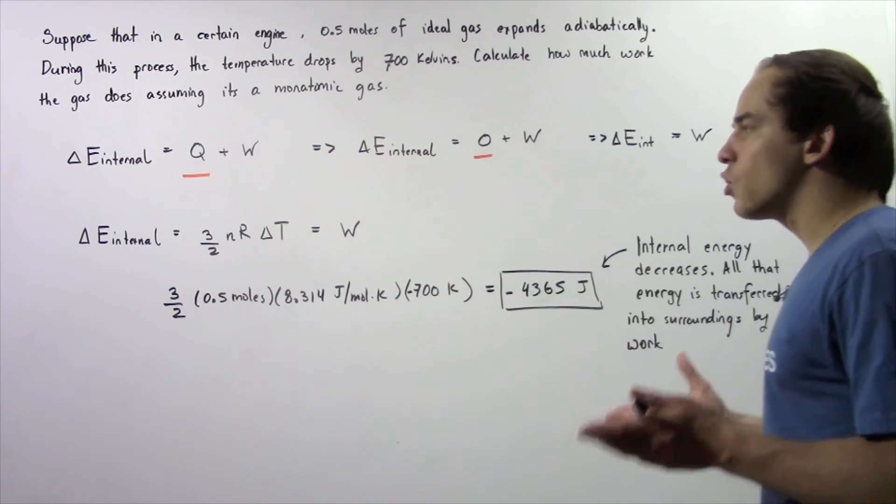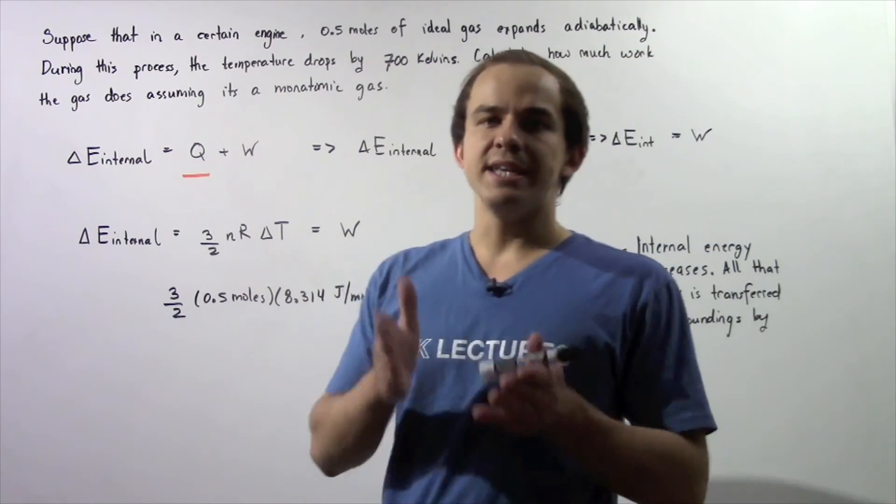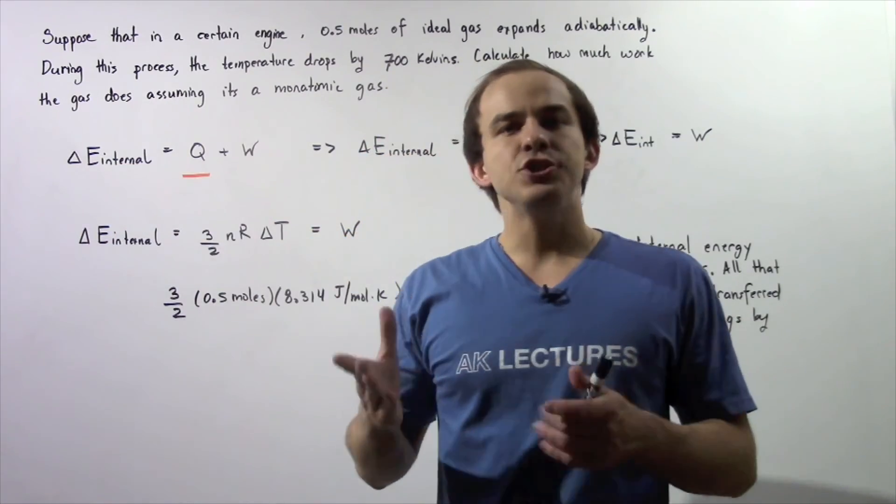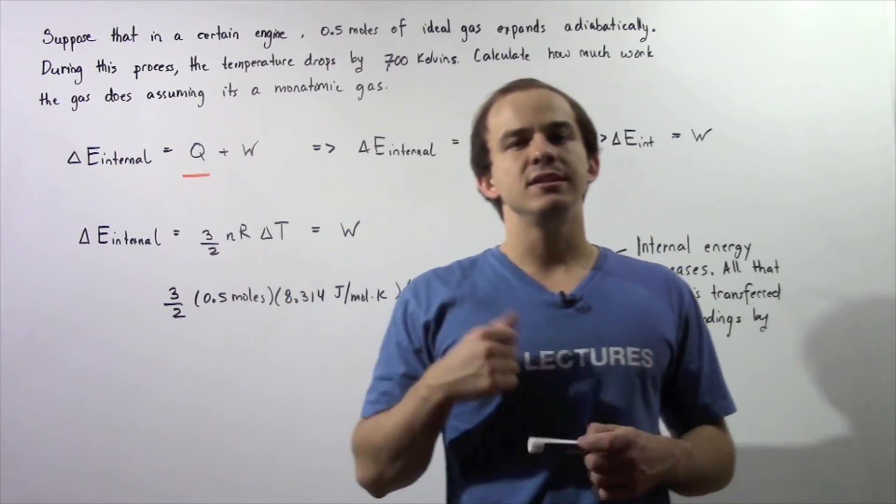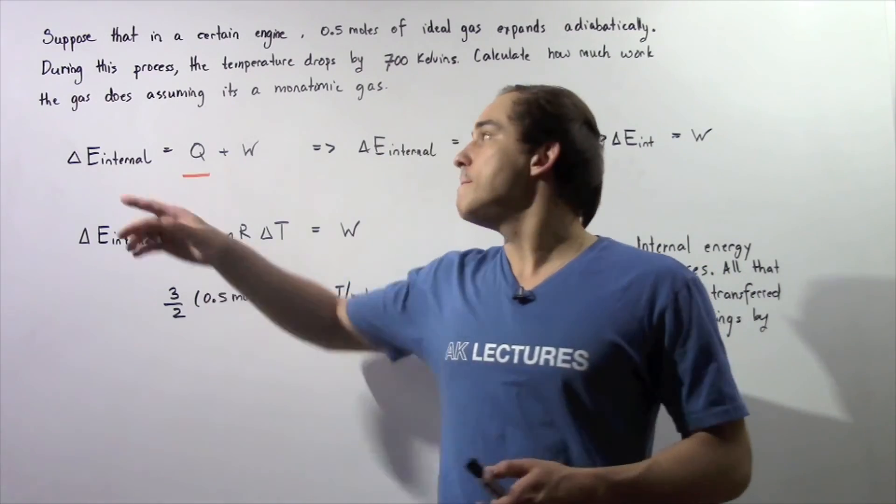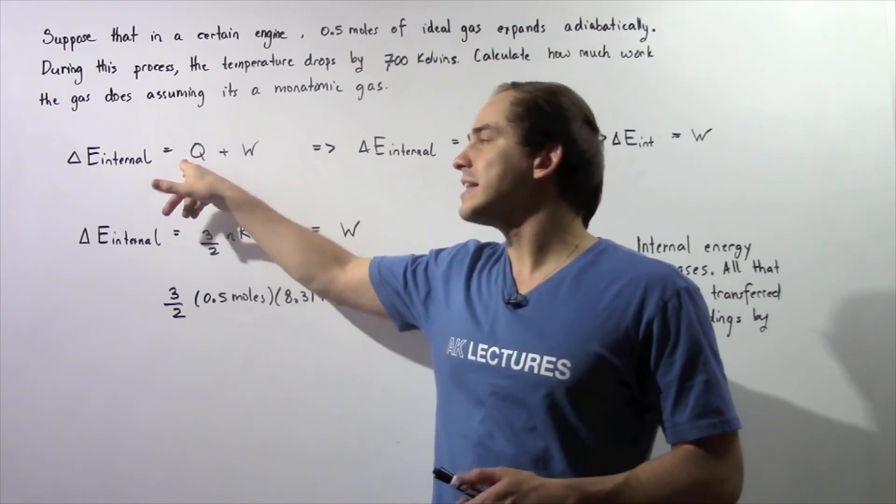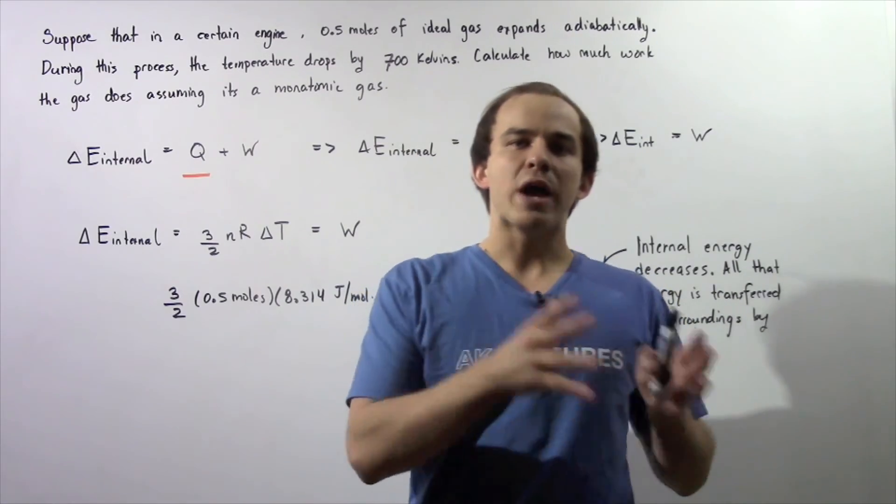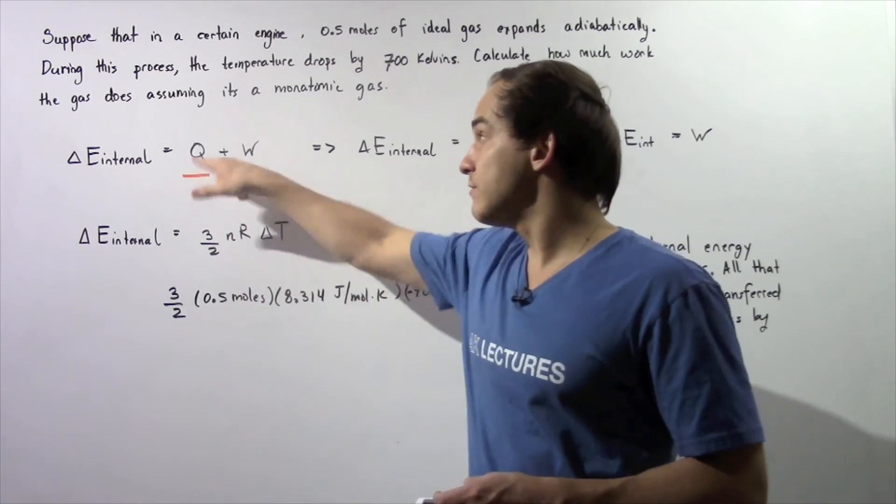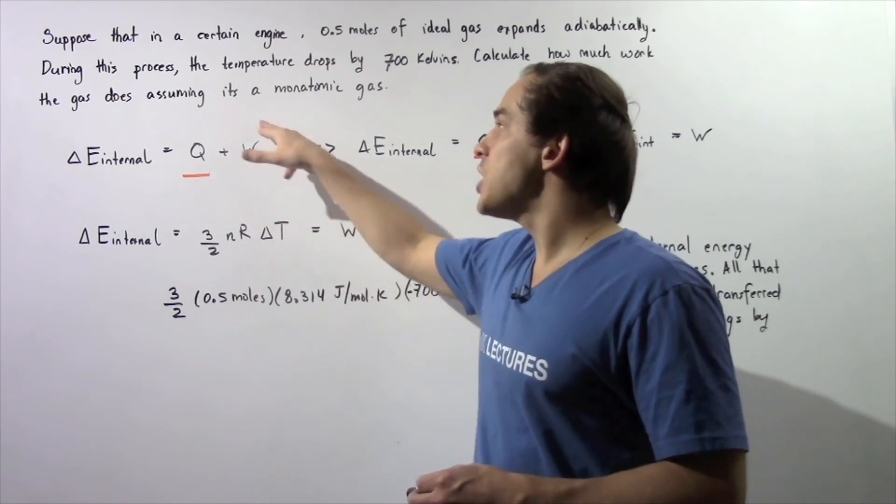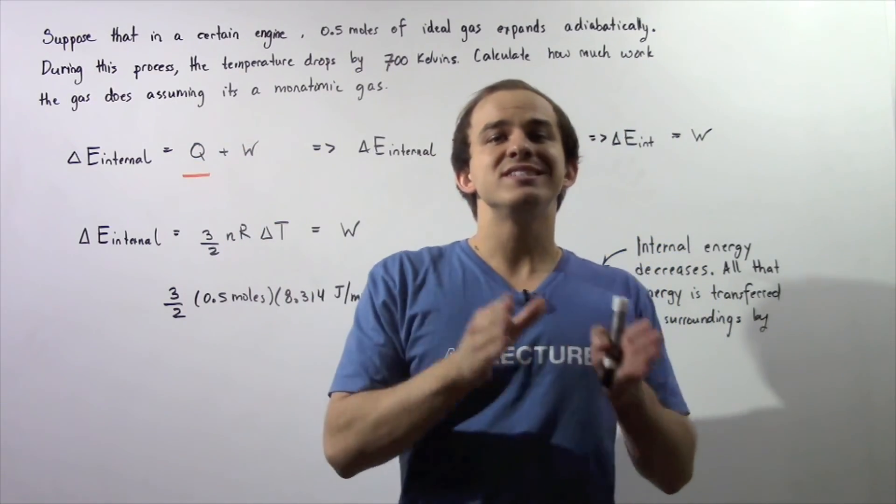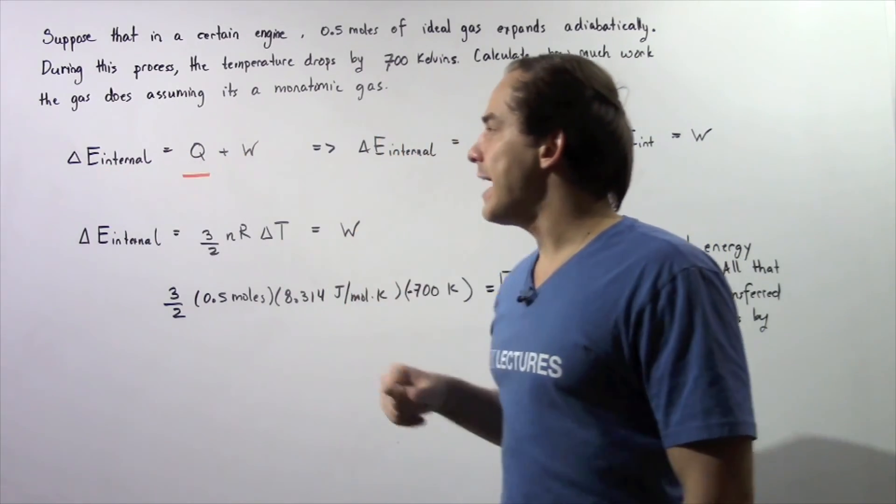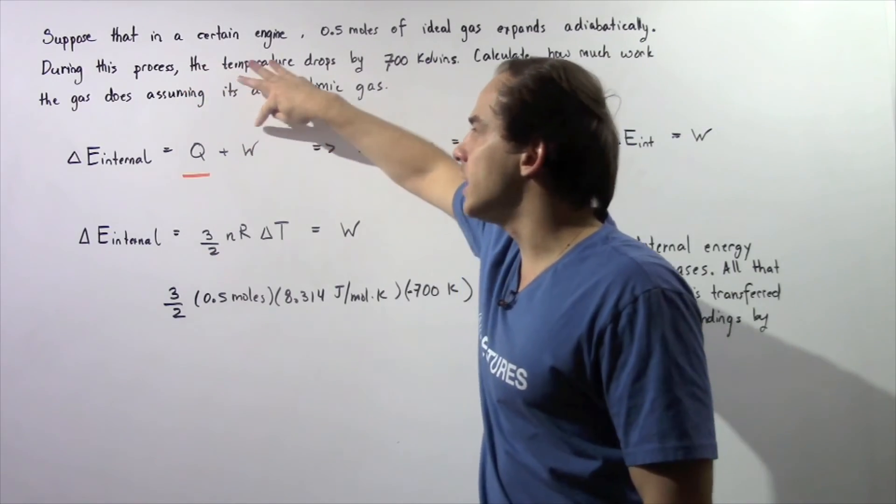Let's begin by recalling the first law of thermodynamics. The first law states that the change in internal energy of our ideal gaseous system is equal to the amount of energy that is transferred as a result of a difference in temperature between the surroundings and our ideal gas given by Q, and the change in energy as a result of work. So, our change in internal energy is given by Q plus W.